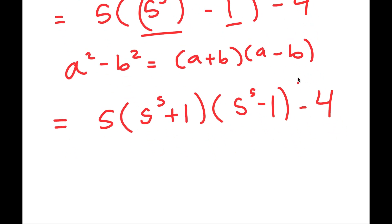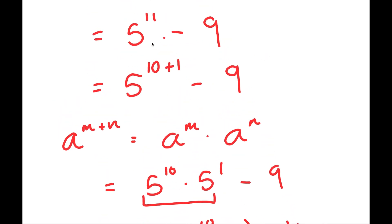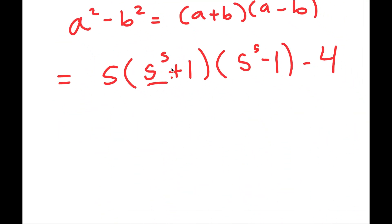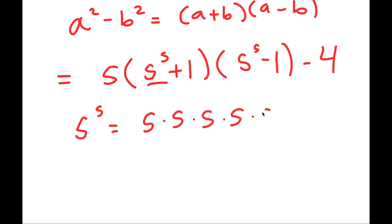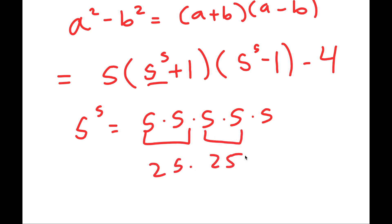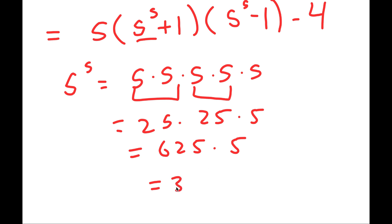Earlier we had 5 to the power of 11, which was quite difficult to solve. But now we have 5 to the power of 5, which is much simpler — it's just 5 multiplied by itself 5 times. 5 times 5 is 25, so 25 times 25 times 5, which is 625 times 5, which is 3,125.